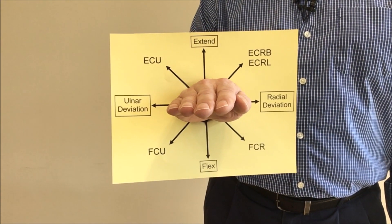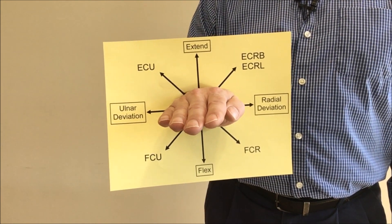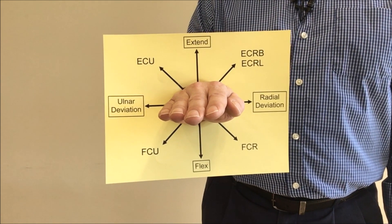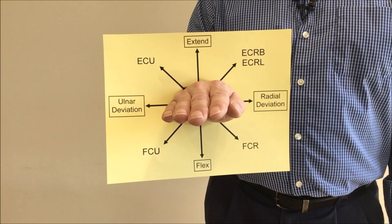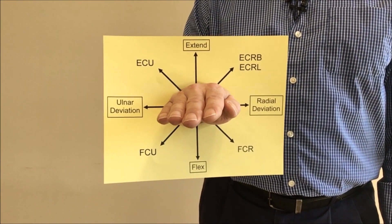Between each of those cardinal plane motions there are individual muscle motions as well and you'll notice that all of the wrist muscles actually act in an oblique direction between the cardinal planes.